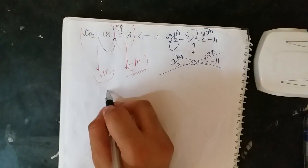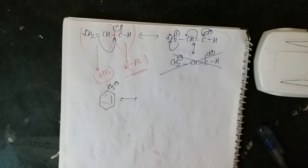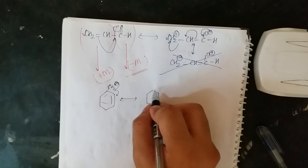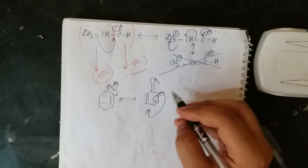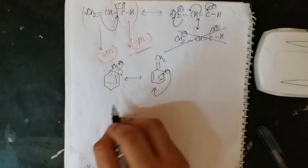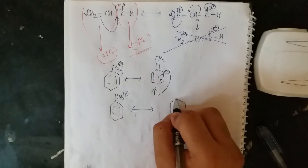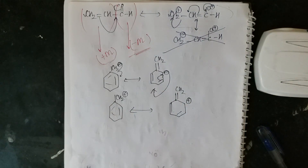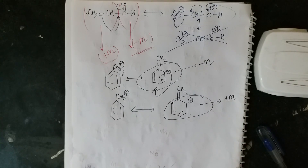Let me take a carbanion: –CH₂⁻ attached to benzene. This lone pair or negative charge goes onto the ring, giving a resonance structure with =CH₂ and a minus on the ring. So the ring shows minus M effect here. For a carbocation: –CH₂⁺ attached to benzene — drawing resonance, the ring shows plus M effect. So the effect depends on the specific compound and resonance structure.